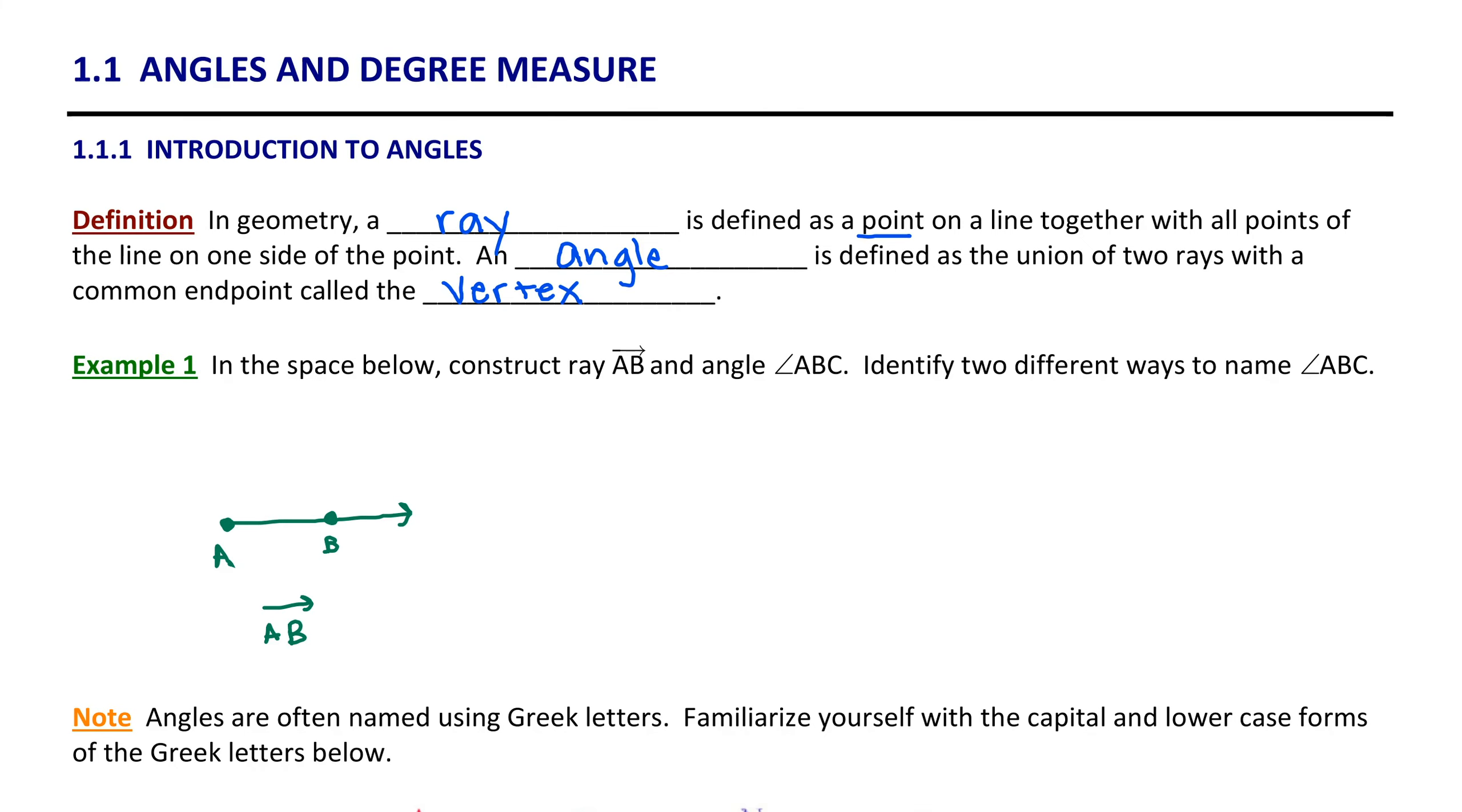To construct angle ABC, do notice that the letter B is in the middle. Therefore, B is going to be the vertex. So we're going to have ray BC. And we can imagine rotating that ray and fixing it at another point called A to define angle ABC.